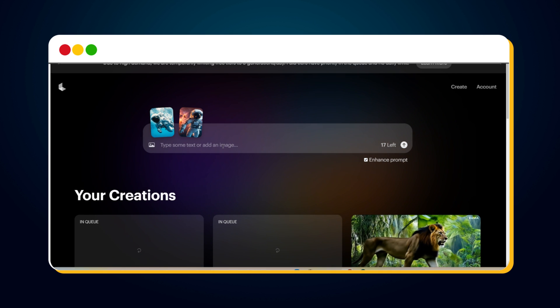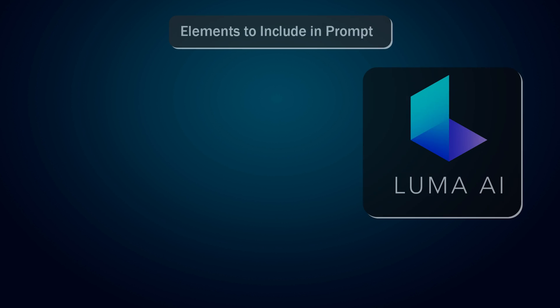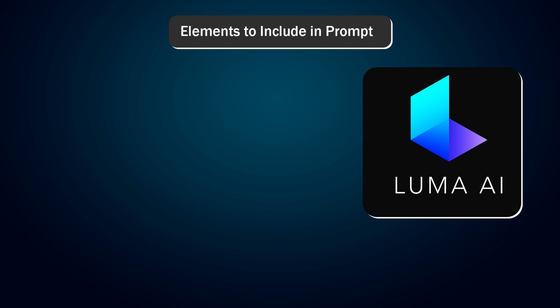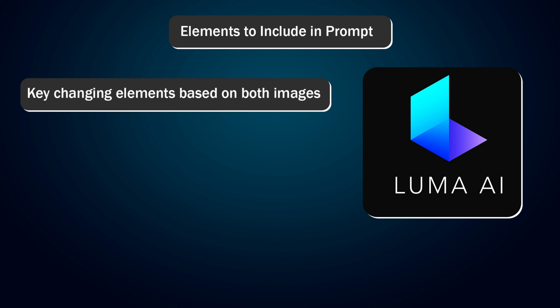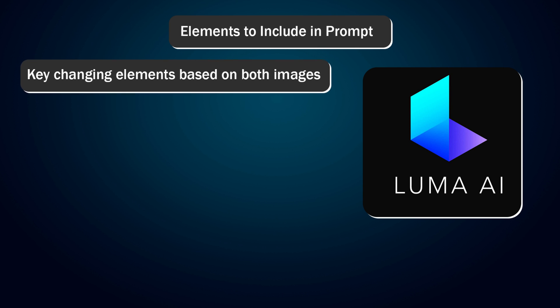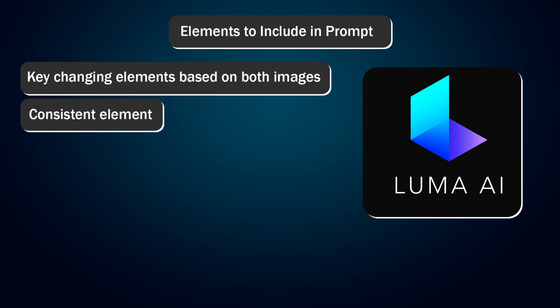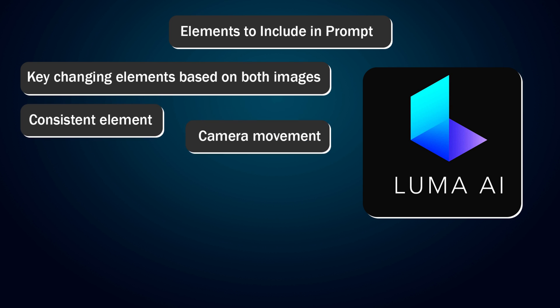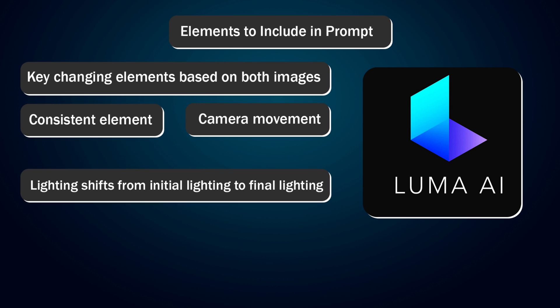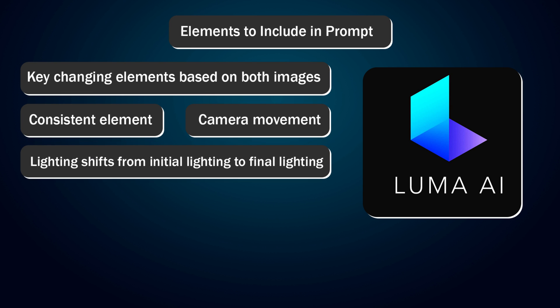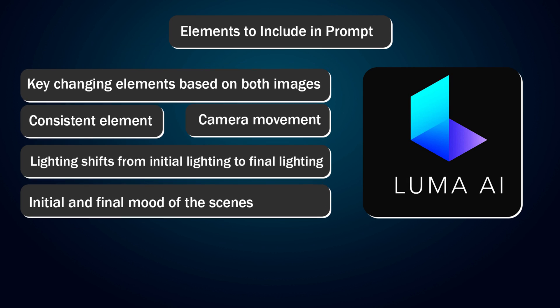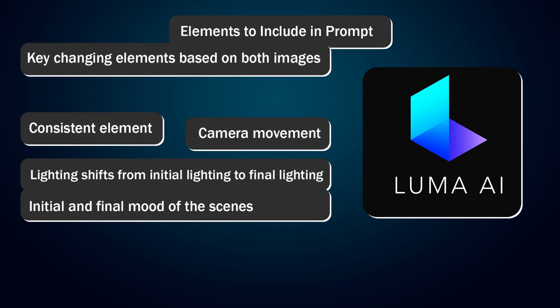We need to provide a prompt to create a transition video using keyframes, and providing a good prompt is very important. Make sure to include the following elements: mention the key changing elements based on both images, mention the consistent elements, describe the camera movement, mention the lighting shifts from initial to final lighting, and mention the initial and final mood of the scenes.